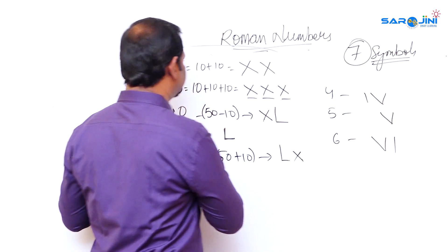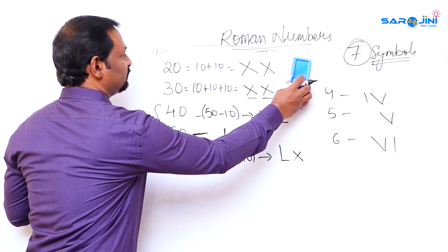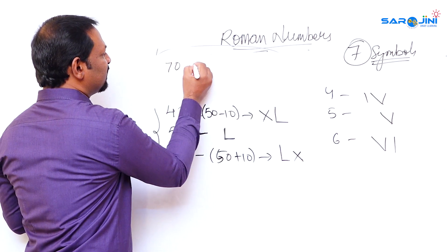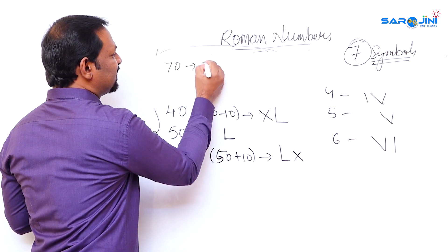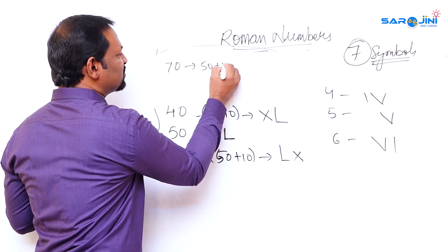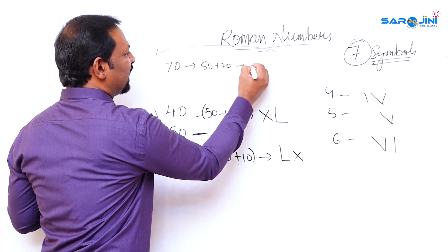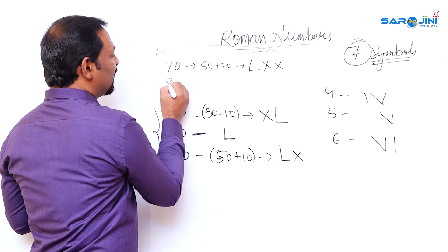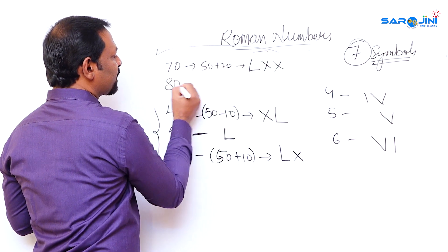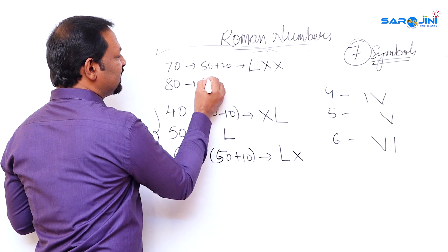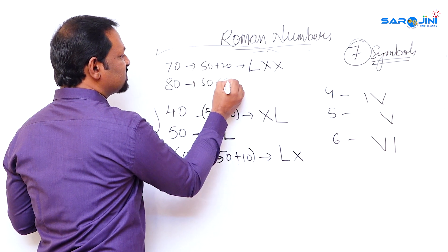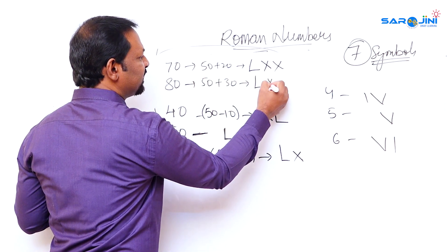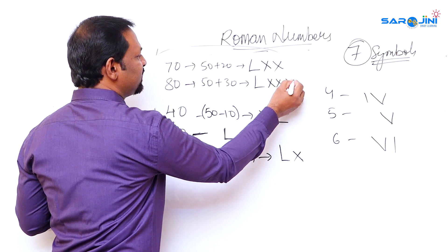Seventy is fifty plus twenty, written as LXX. Eighty is fifty plus thirty, written as LXXX. Notice you can write up to three X's after L without violating the rule.